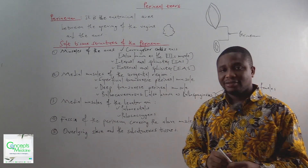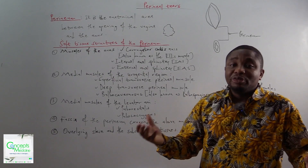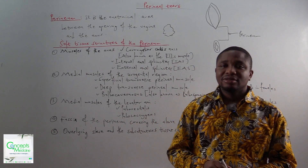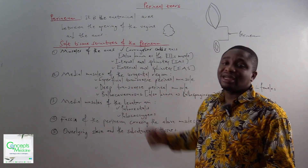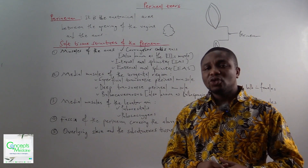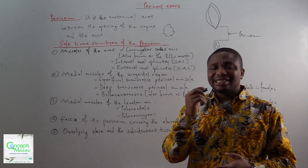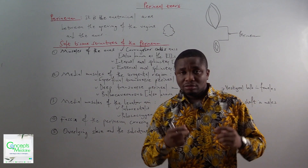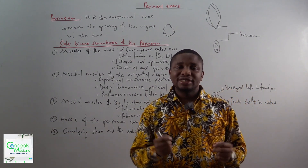The next muscle with regards to the muscles of the anus is the internal anal sphincter, which is an involuntary muscle that helps in defecation together with the external anal sphincter, which is a voluntary muscle. The internal anal sphincter and the external anal sphincter together contribute to defecation and the maintenance of faecal continence.